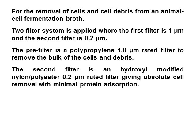For the removal of cells and cell debris from an animal cell fermentation broth, a two-filter system is applied. The first filter is a polypropylene 1-micron rated filter to remove the bulk of cells and debris. The second filter is a hydroxyl-modified nylon/polyester 0.2-micron rated filter, giving absolute cell removal with minimal protein adsorption.